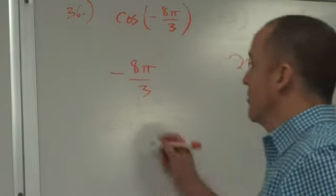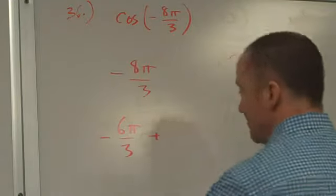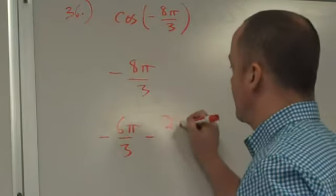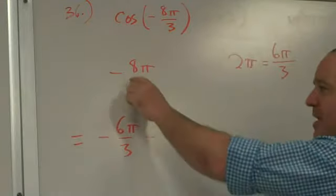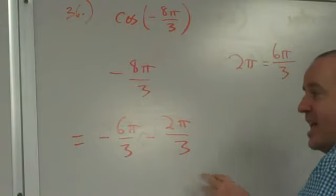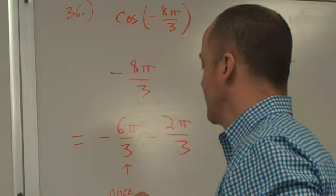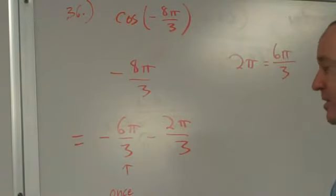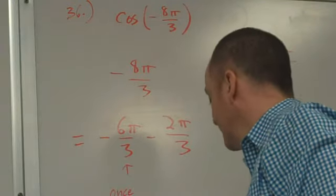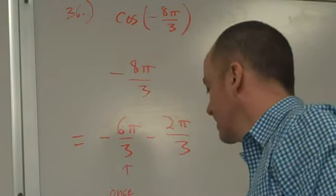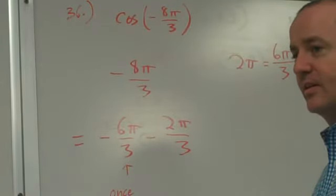So, this is negative 6 pi over 3, minus another 2 pi over 3. You see how I can write 8 pi over 3 as these two equivalent fractions? And this one is once around. Student: Are you just finding points that you kind of know on the unit circle? Teacher: Well, we know 6 pi over 3 is one whole time around. Right. So, since this is negative, this is 6 pi over 3. And then it keeps going 2 more pi over 3.